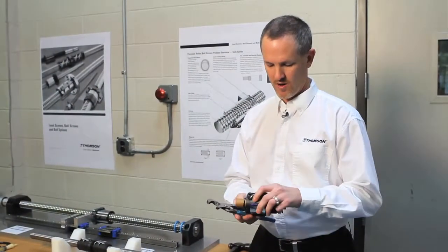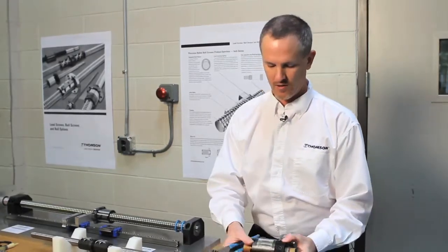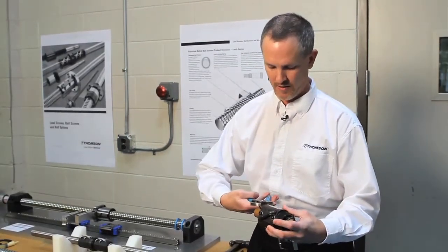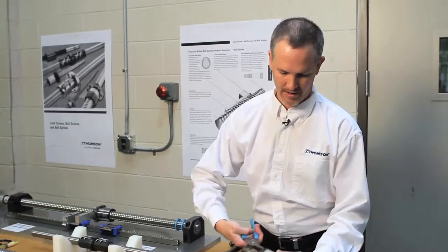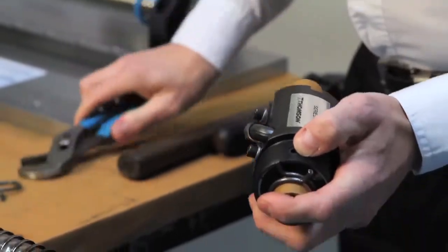The way to install this would be, first, determine which way you want it on the screw. So I'm going to decide to put it on with the threaded end going toward the drive journal. So what I want to do is take off the shipping arbor.